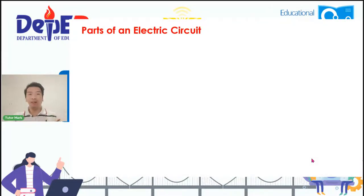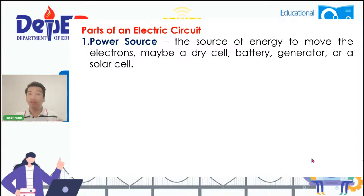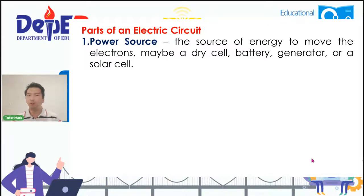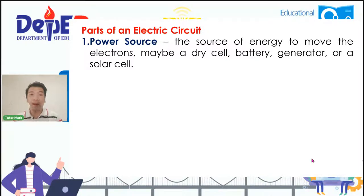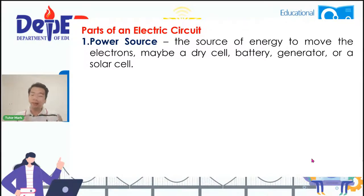These are the parts of the electric circuit. First is the power source — pwede itong maging baterya, diesel, generator, o solar panel. Importante sa power source — dito nagmumula ang kuryente. Without it, hindi tatakbo ang isang bagay. Sa ating illustration kanina, yun ay ang baterya.